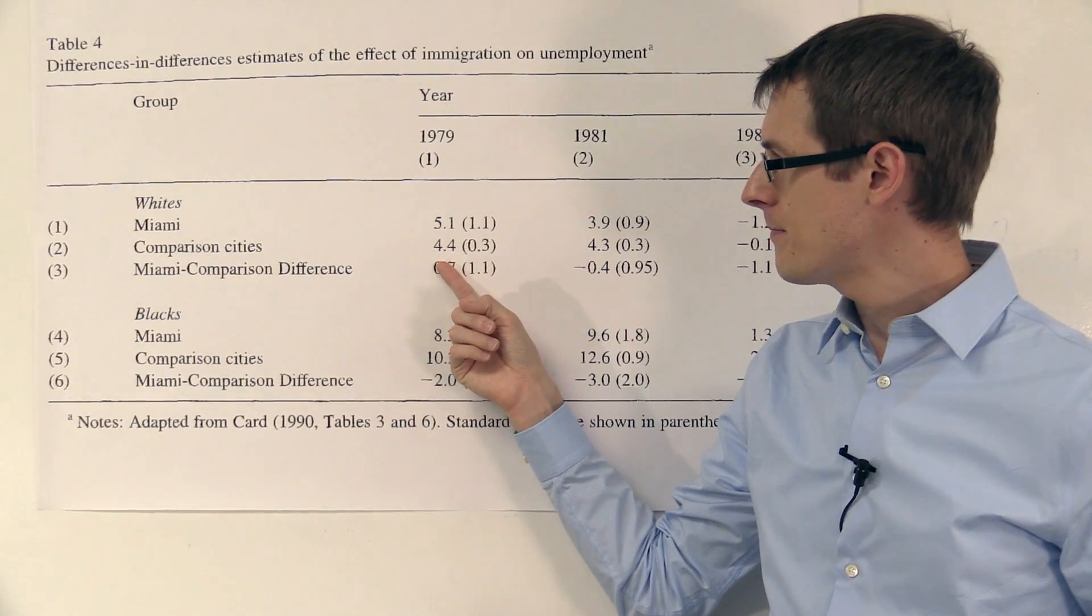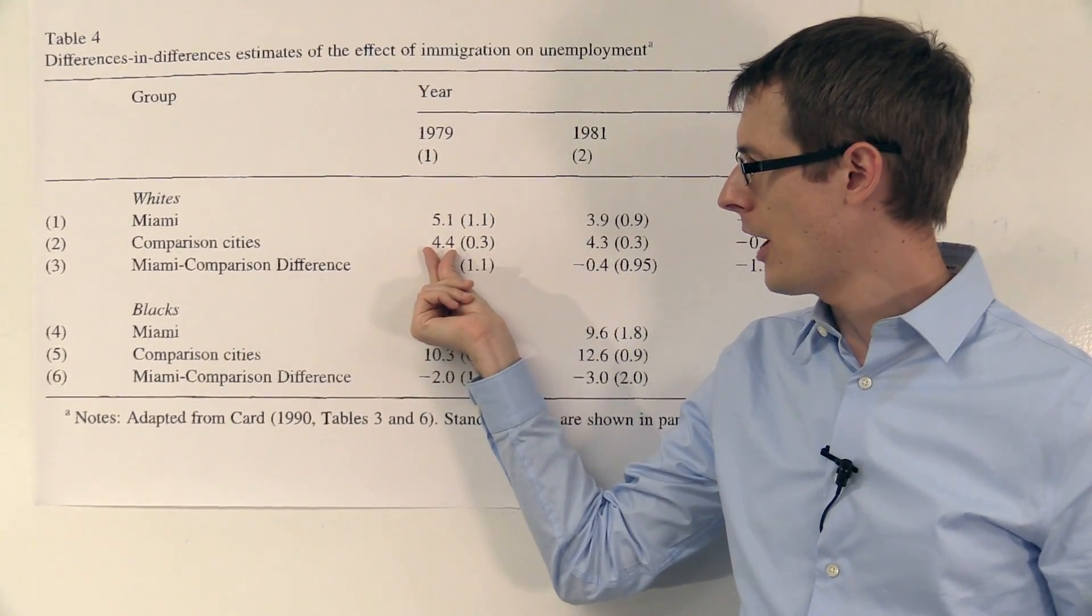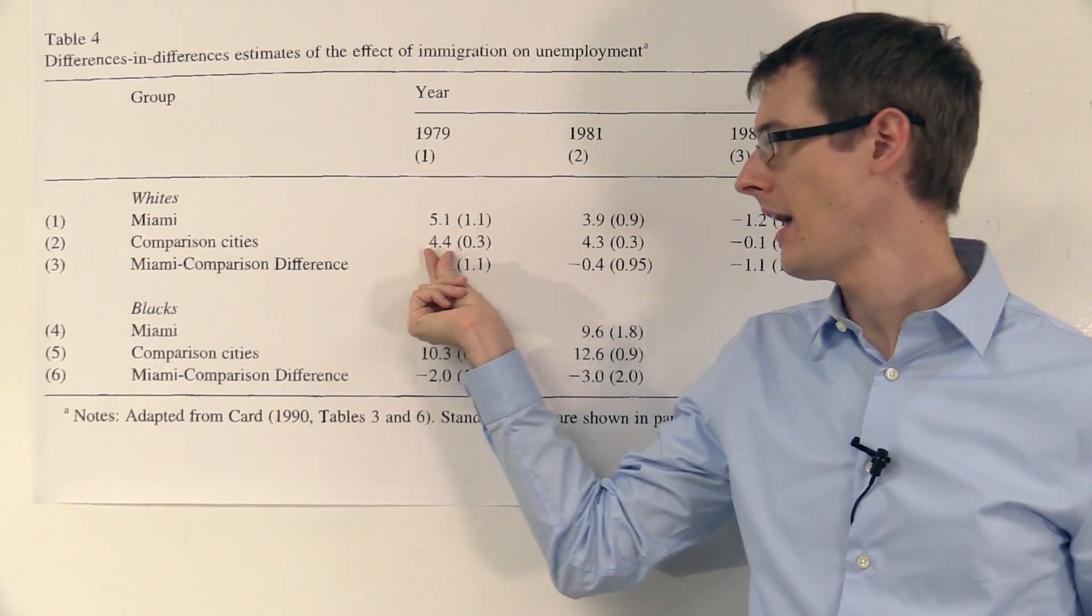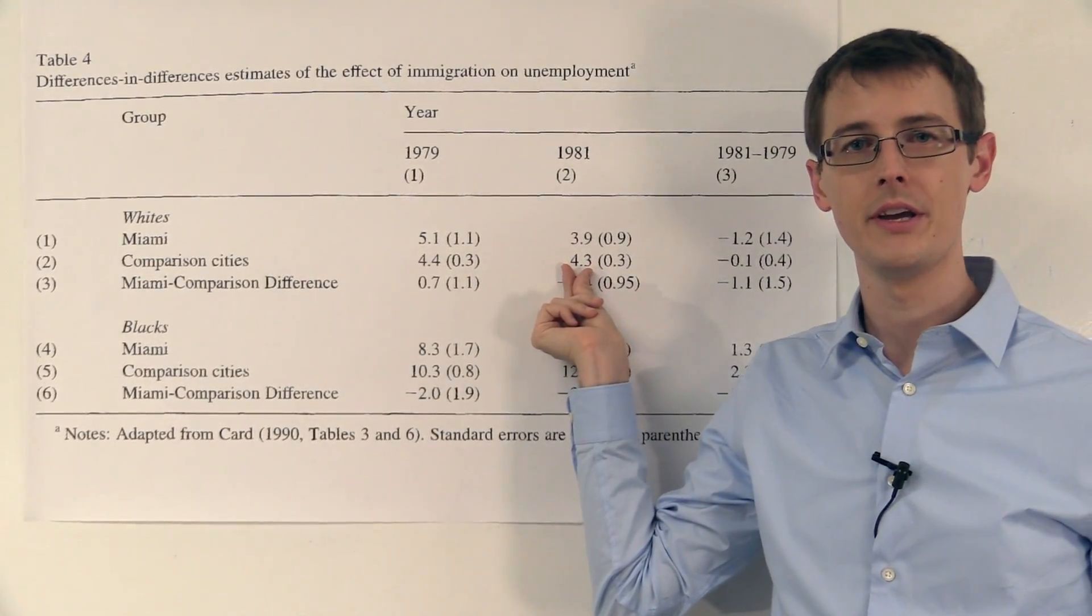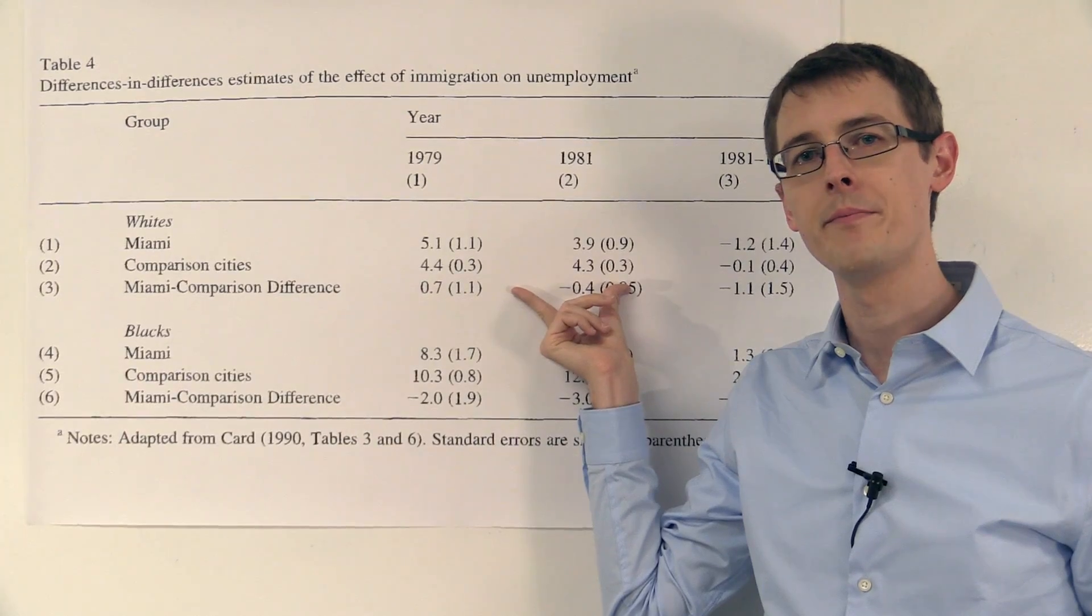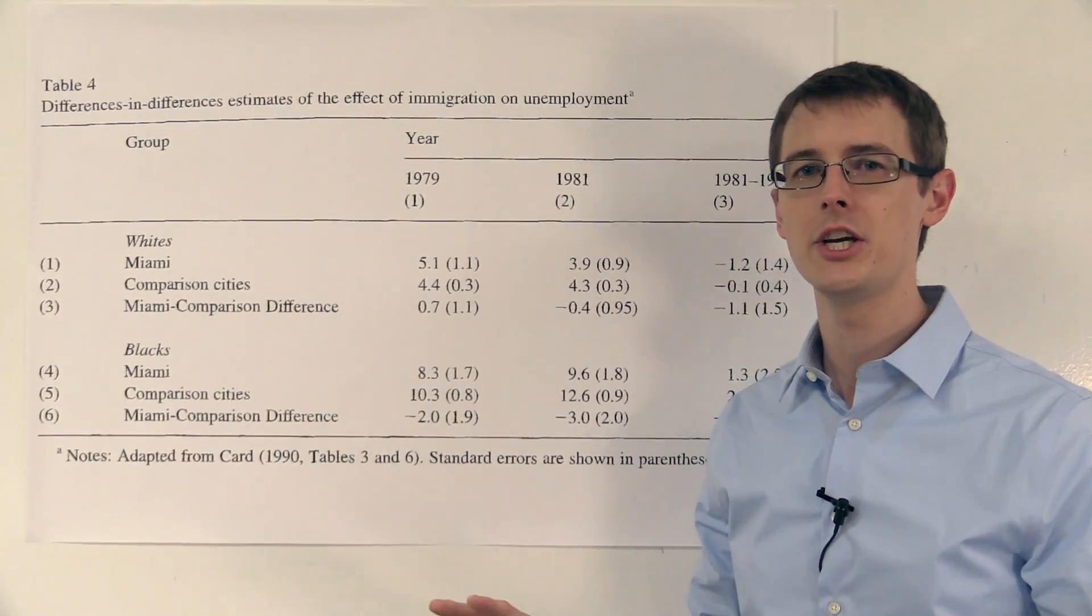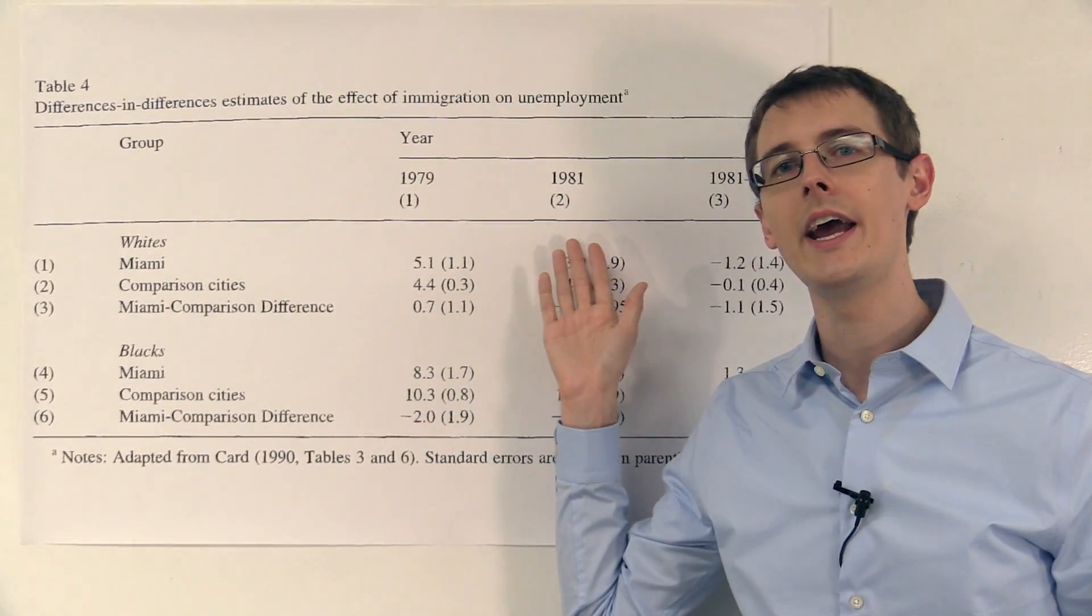So what was happening in these cities? Well, before immigration, for whites, the unemployment was 4.4% for the comparison cities. Now, after Miami immigration, it was 4.3%. So it decreased by 0.1%. Now remember, in the comparison cities, there wasn't any massive immigration between '79 and '81.